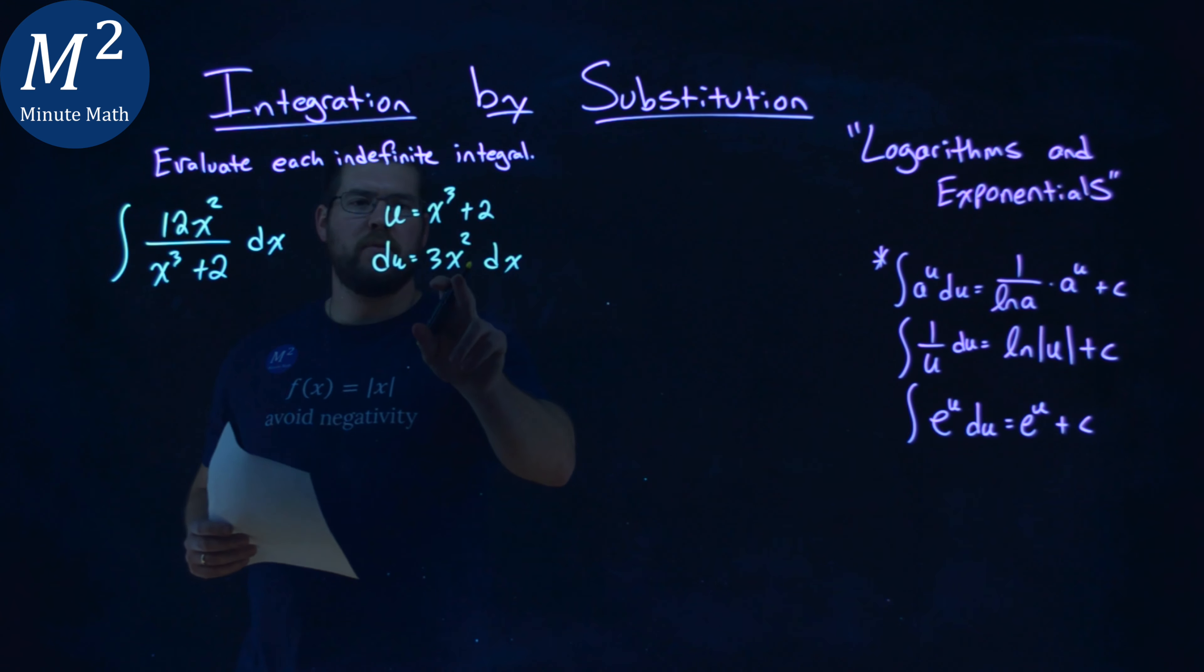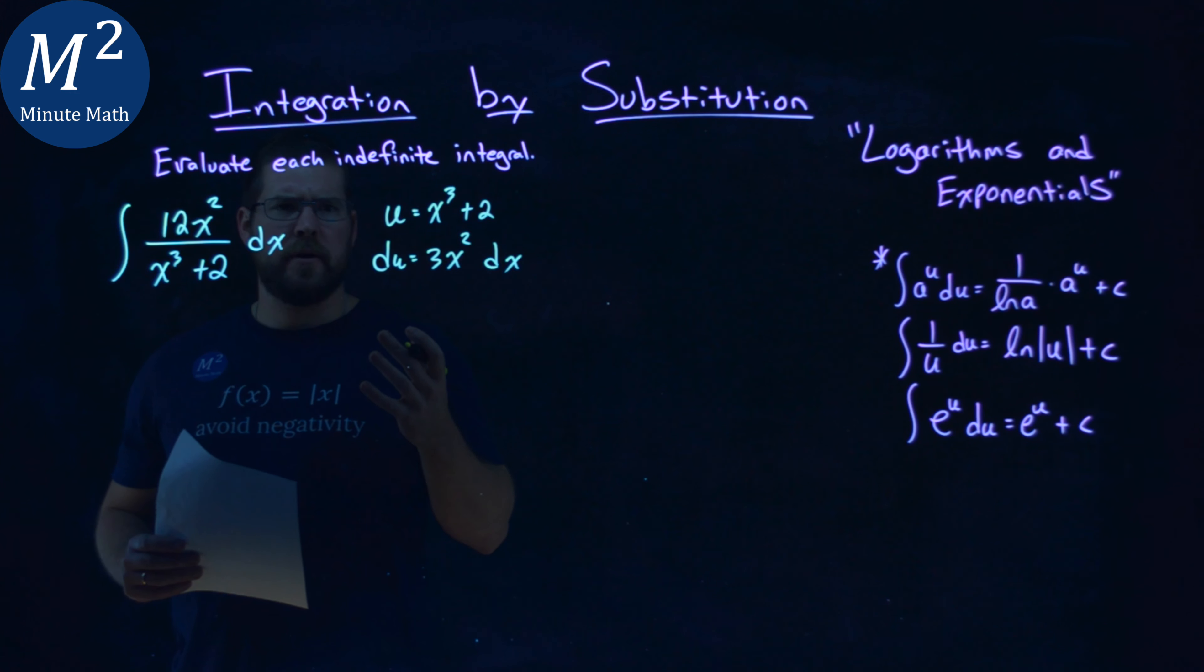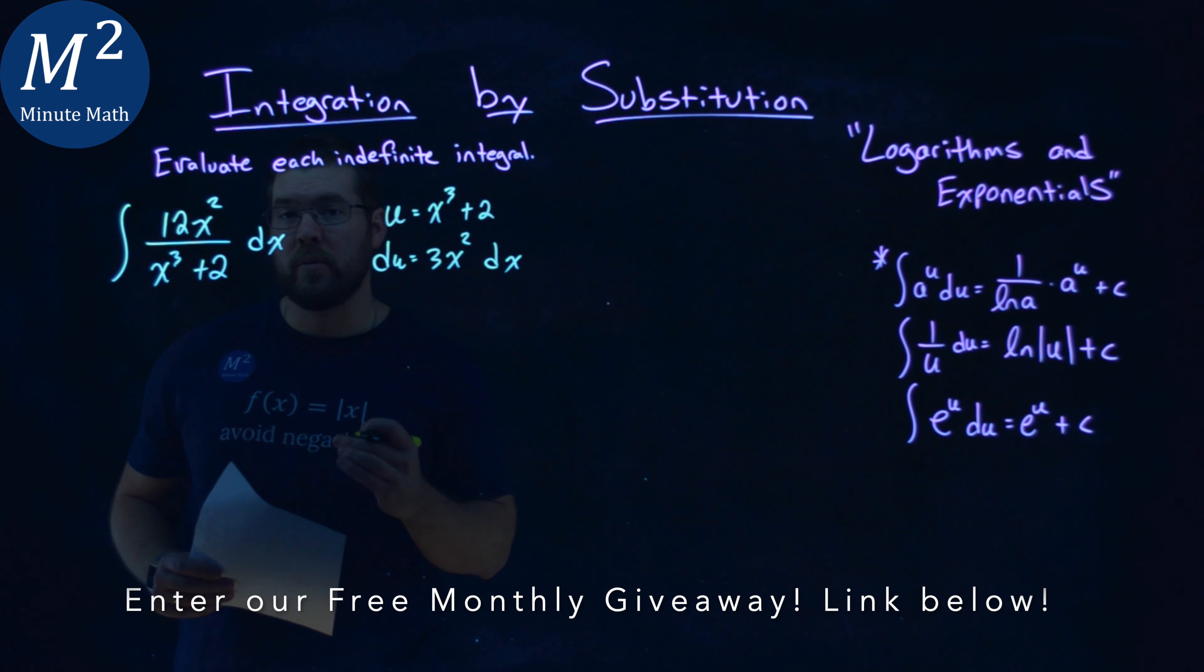Now luckily for us, that 3x squared almost looks like the numerator. Well, how can I make it look like the numerator? If I just pull out a 4 from the 12, I'm left with that 3 there.